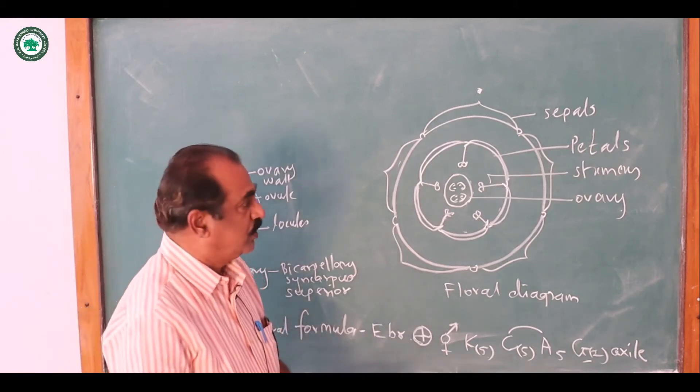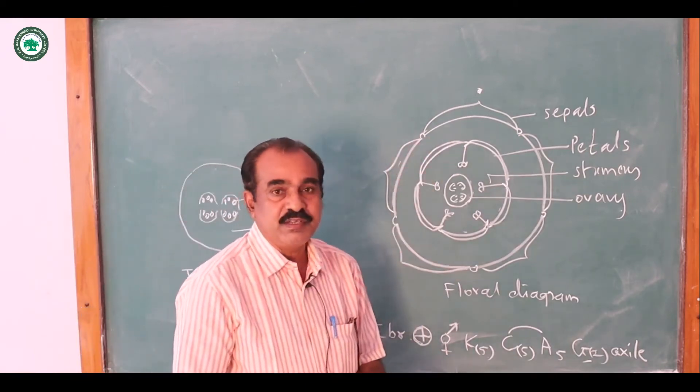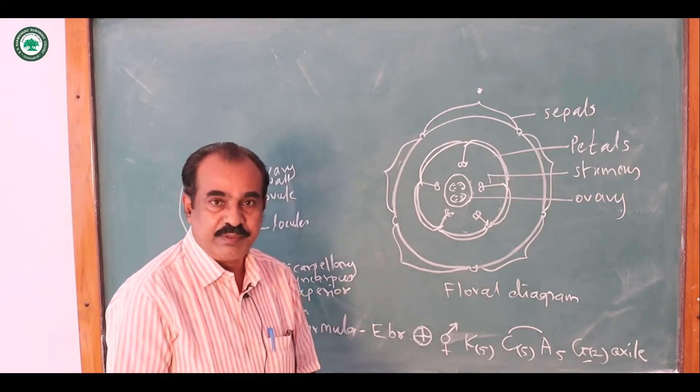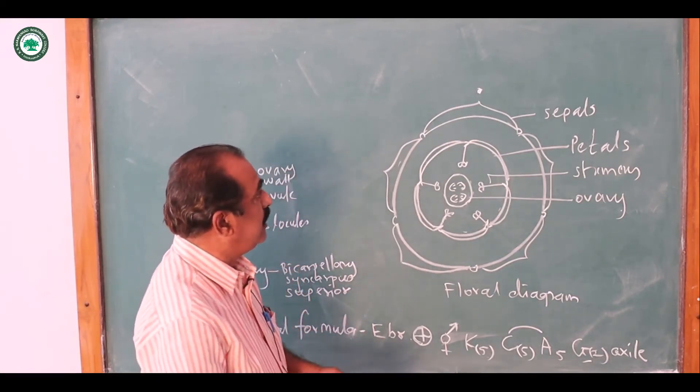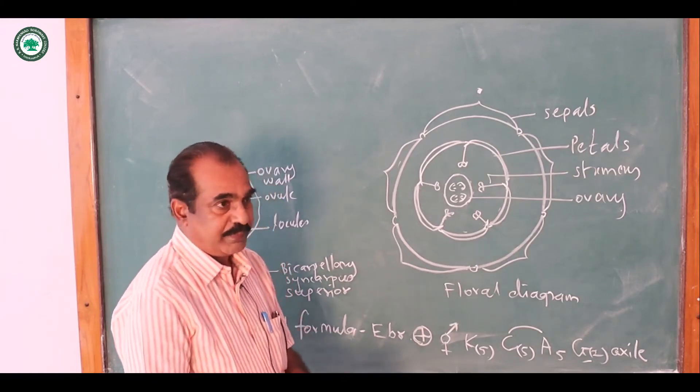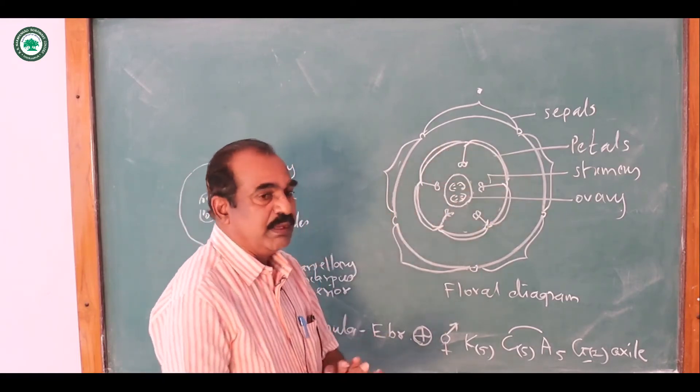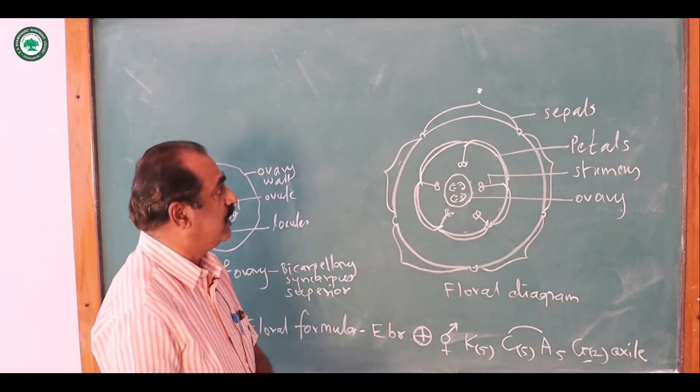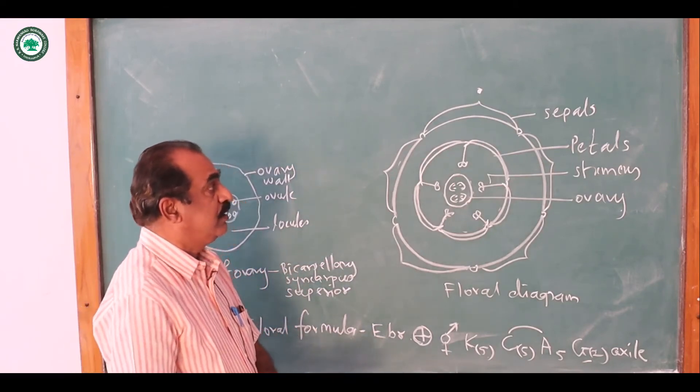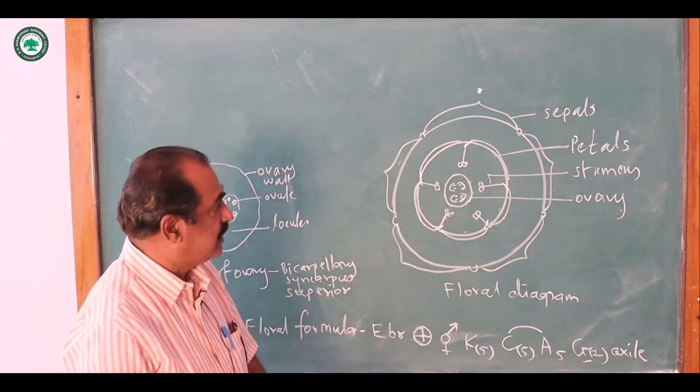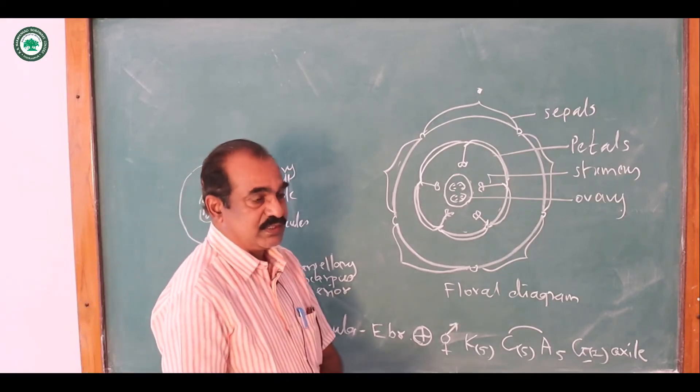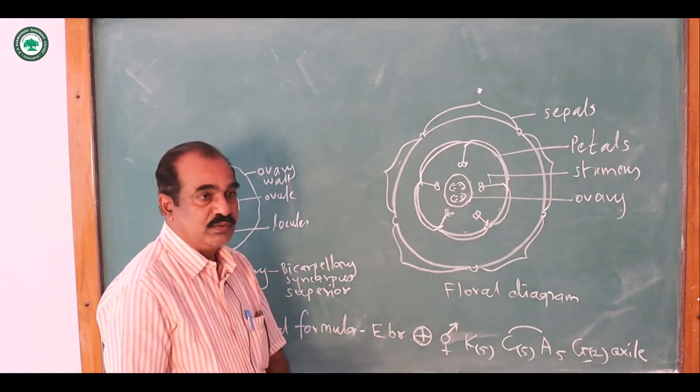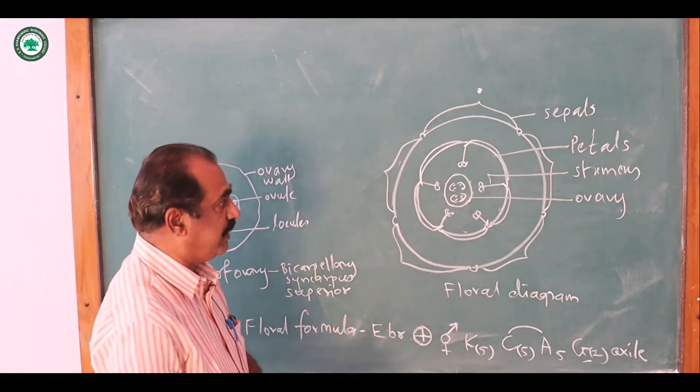Now the floral diagram. Now from the external side there is the sepals, now they are five in number, they are united which is called as the gamosepalous and it is valvate aestivation is there. Now inside this, these are the corolla and the members of the corolla are called as the petals. They are five in number and they are very long and twisted aestivation is there. Inside this there is the stamens. They are five in number, they are alternated to the petal and they are attached to the petal. So they are called as the epipetalous.